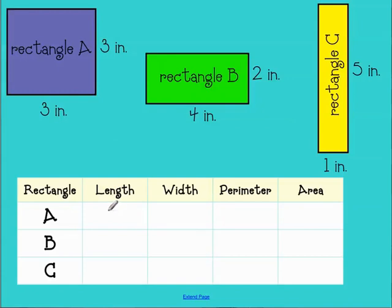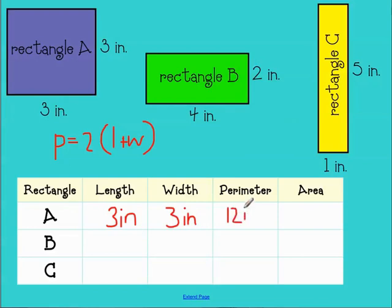Can rectangles have the same perimeter but different areas? So rectangle A has a length of 3 inches and a width of 3 inches. And you know that the formula for perimeter is perimeter equals 2 times length plus width. So in this case, length plus width, 3 plus 3 is 6, and 6 times 2 is 12. So rectangle A has a perimeter of 12 inches. But area equals length times width. So using rectangle A as my example, length is 3, width is 3, length times width would be 9 inches squared.